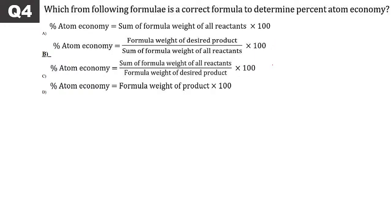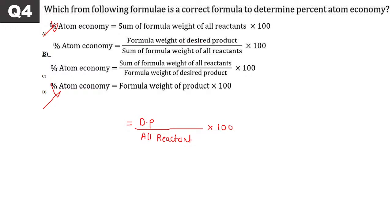Fourth and last: Correct formula to determine percentage atom economy. Atom economy = (weight of desired product / weight of all reactants) × 100. After simplification: formula weight of desired product divided by formula weight of all reactants — option number B.